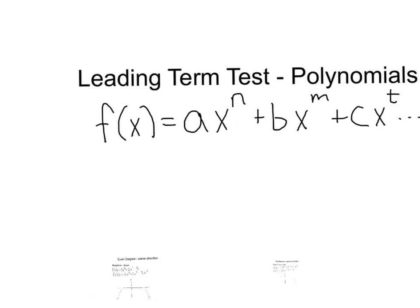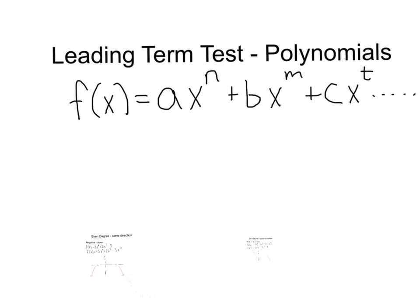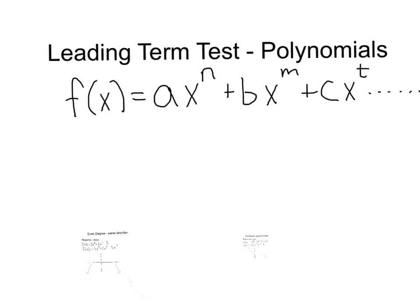In working with leading terms and polynomials, you're just looking at whether we have a positive or negative leading term, and whether we have an odd or even degree. Even degree means both end behaviors point the same direction; odd degree means they point in opposite directions.